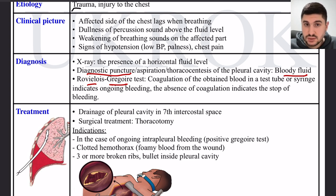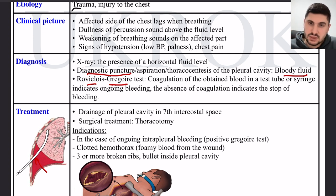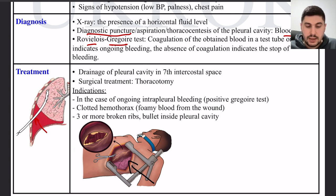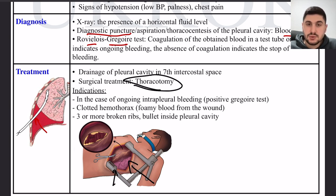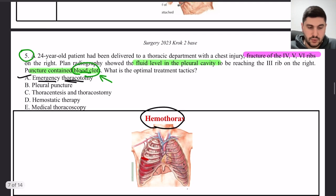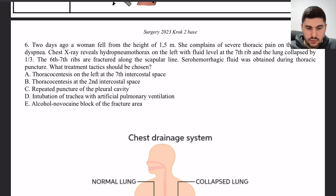However, if there are blood clots, drainage is insufficient because clots cannot be drained through a tube. If there are three or more broken ribs, simple drainage is also inadequate. In that case, we need to open the chest — thoracotomy — to fix the bleeding, repair the ribs, and remove the clotted hemothorax. So the answer here is emergency thoracotomy.